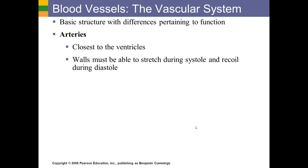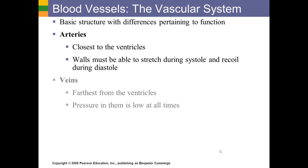Arteries are the closest blood vessels to the heart. They carry blood at the highest pressure, and as the ventricles contract and relax, the arteries have to be able to stretch with every systole and recoil with every diastole — so they're much more elastic. Veins are farthest away from the ventricles; blood pressure in veins is low at all times, and they don't have to endure that pressure wave, so they are less elastic.